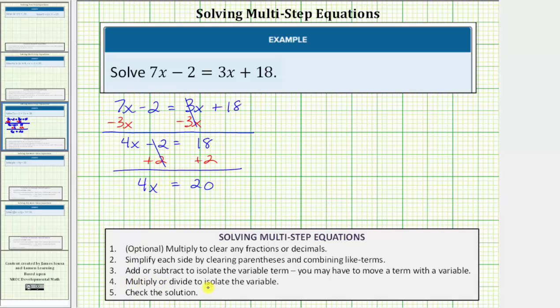Step four, we multiply or divide to isolate the variable. 4x means 4 times x, and therefore to isolate the variable, we need to undo the multiplication by performing the opposite or inverse operation. Because the opposite operation of multiplication is division, for the next step, we divide both sides by 4.